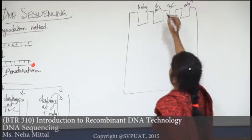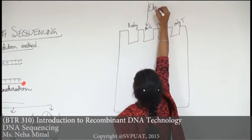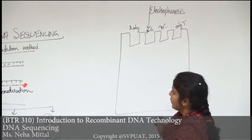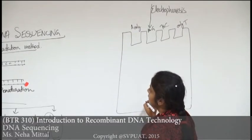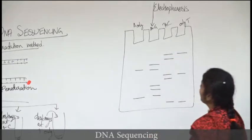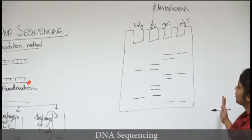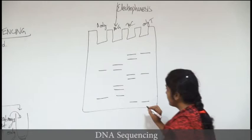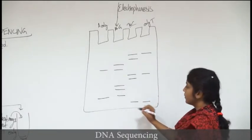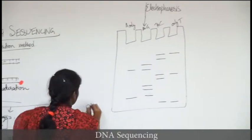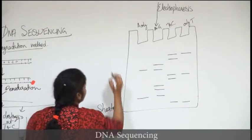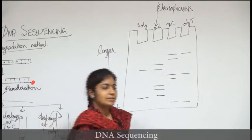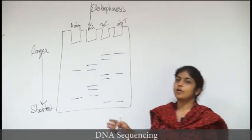After electrophoresis we get a banding pattern. We have to read the gel so that we can get the sequence. In the lowermost part of the gel we get the shortest fragments after electrophoresis, and on the upper side of the gel we get longer fragments, because the fragments move in the gel according to their molecular weight.